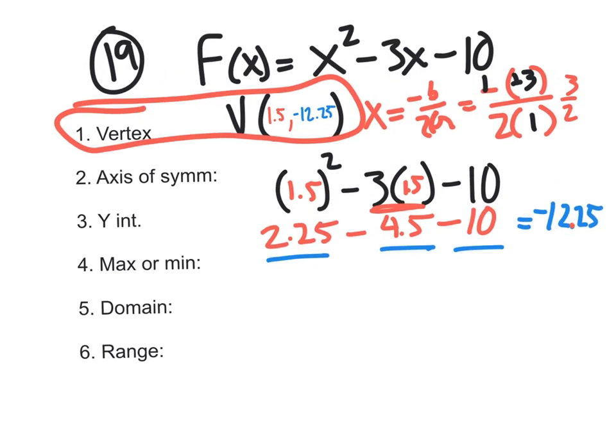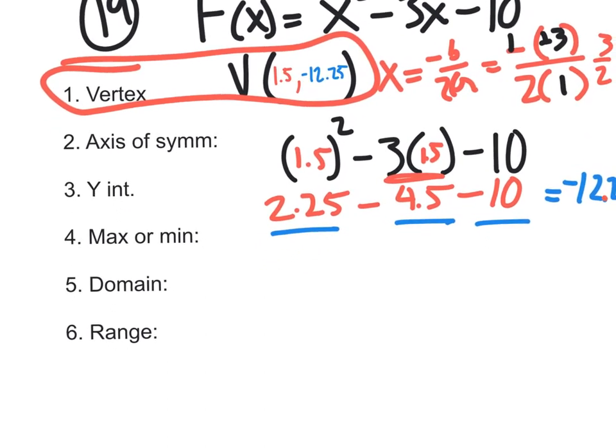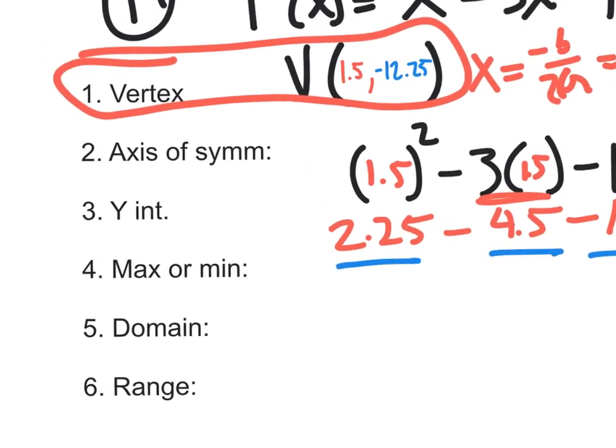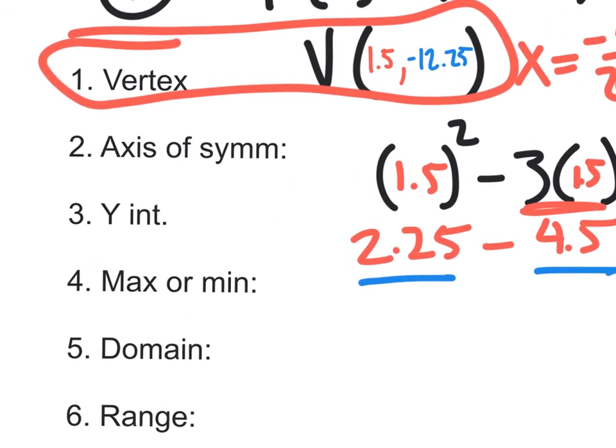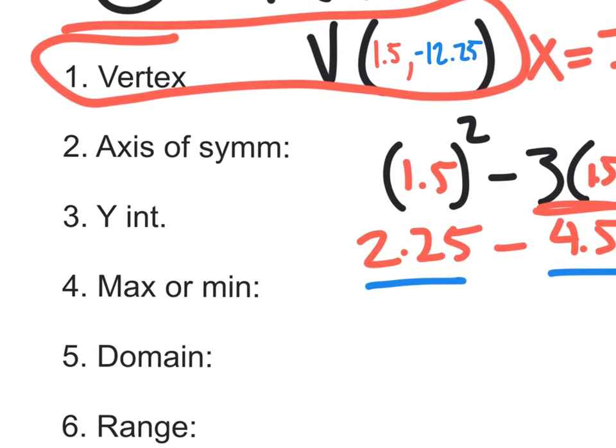Okay, so now let's go for the axis of symmetry. That's pretty easy if we already know the vertex, because the axis of symmetry is simply going to be what? X equals, and you have to put X equals, X equals what? 1.5. Man, that's like three points right there on tomorrow's test.